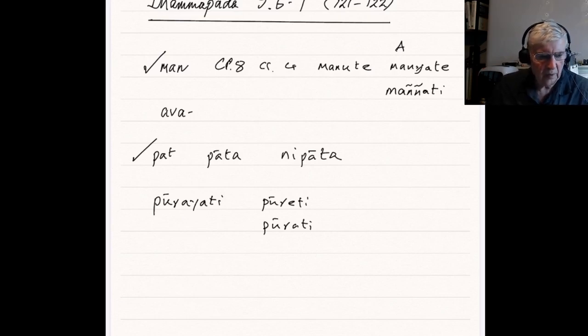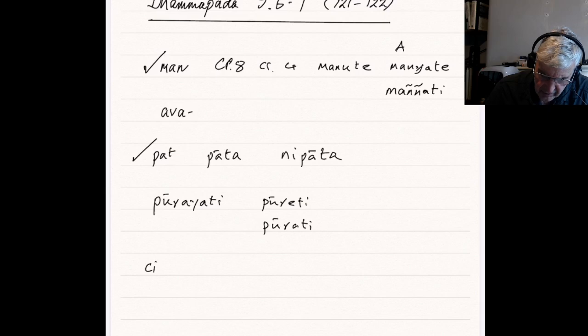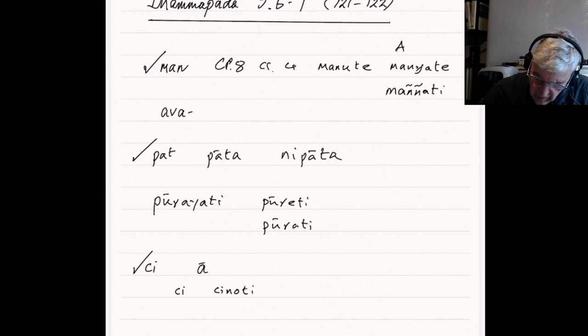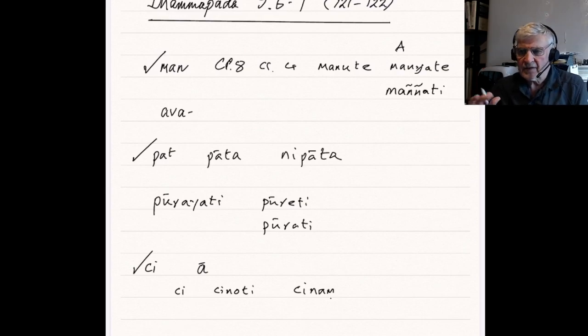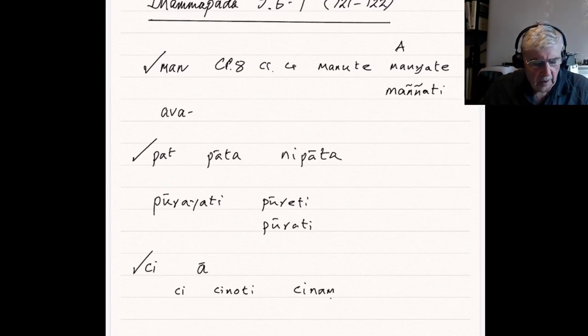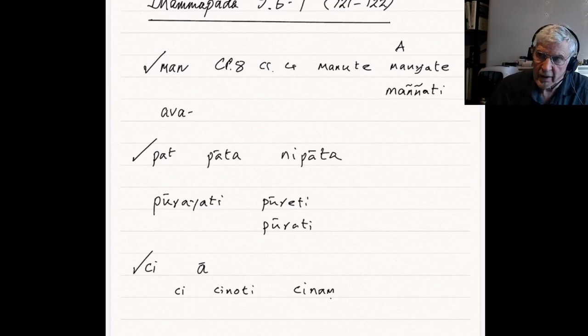This acinam, we've seen it a couple of verses ago. So, it's our root, qi, and the present participle, with the prefix, a. So, we have qi, present tense, qinuti, present participle, in Pali, qinam. With the prefix a, that just suggests, to, on, onto it, on top of it. So, piling up, heaping up. So, tokam, tokampi, even just a little bit by a little bit. Acinam.